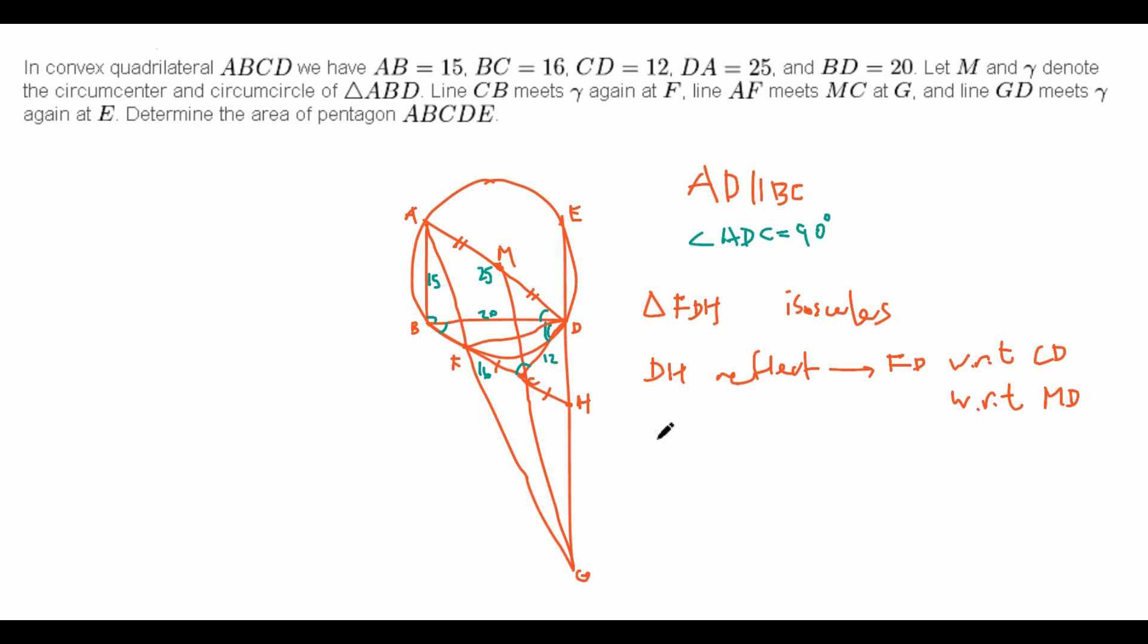So, now we know that DH reflects to DF with respect to MD, but DH is just equal to EG. Since EG is the reflection of FD with respect to MD, and because MD is part of the diameter of this circle, then this implies that, finally, E reflects to F with respect to MD.